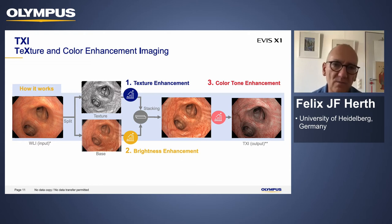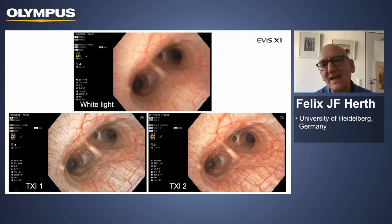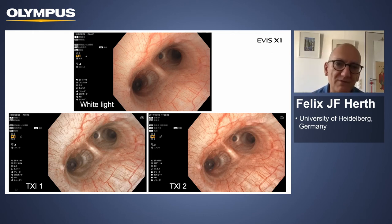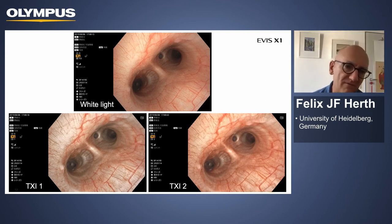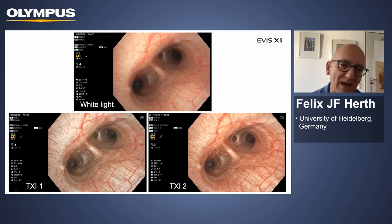Here is the comparison: white light, then TX1 and TX2. The idea is to give you a better view of how it really looks inside the lung. Ralph Eberhardt and I are still debating who prefers TX1 versus TX2, but it's really fascinating how much you can change the visualization when you activate that mode. For me, the most exciting feature is the feeling of a three-dimensional image. You can also combine it automatically with the brightness adjustment and additional options — combining with TXI Mode 1 or TXI Mode 2.